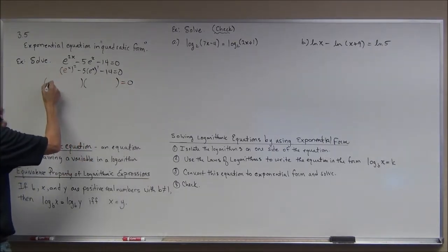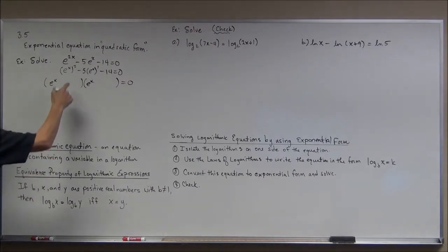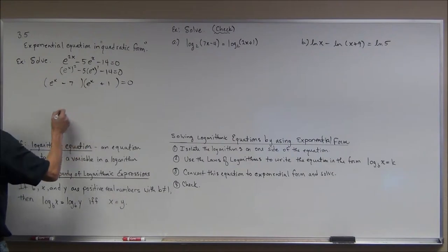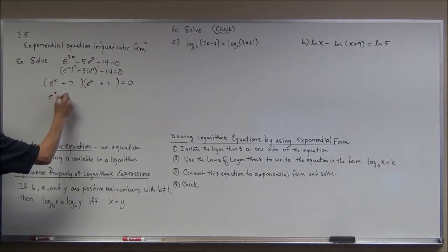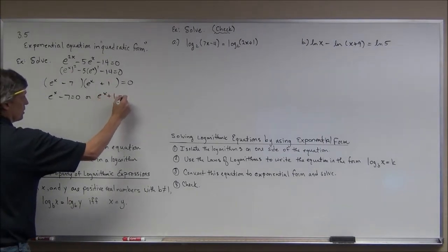So I would get e to the x and e to the x. I need two numbers whose product is negative 4, whose sum is negative 5. I'm thinking minus 7 and plus 1. I'm going to set e to the x minus 7 equal to 0. I'm going to set e to the x plus 1 equal to 0.